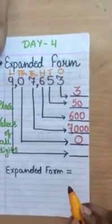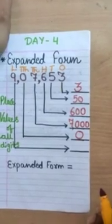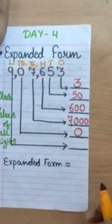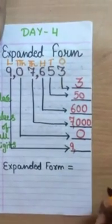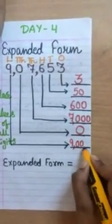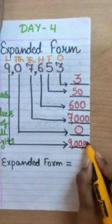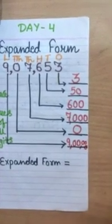Now, let's see about 9. 9 is at lakh's place. So, the place value of 9 is 9 lakh. So, how we will write 9 lakh? 9, 2 zeros and more 3 zeros. It is 9 lakh.